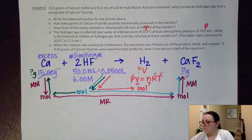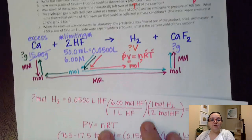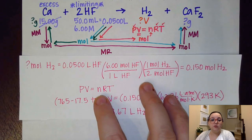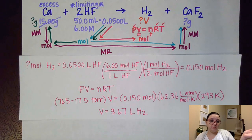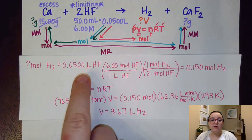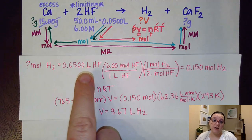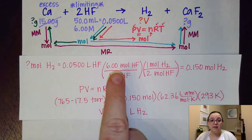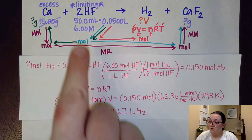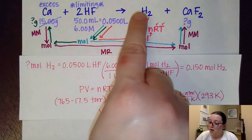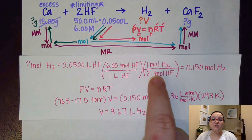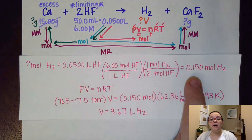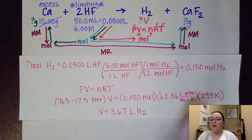Starting from the limiting reactant, I use 0.05 liters of HF, apply the molarity — 1 liter to 6 moles — then a two-to-one mole ratio (2 moles HF produce 1 mole H₂). That gives me 0.150 moles of H₂. Now, I noted a pressure of 765 torr, but this gas was collected over water. The problem states the water vapor pressure at 20°C is 17.5 torr, so I must subtract that off before using the pressure in PV = nRT.